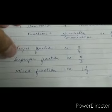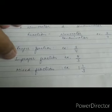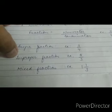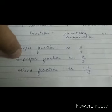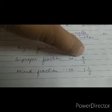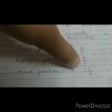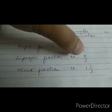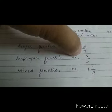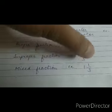The second type is improper fraction. An improper fraction is a fraction in which the numerator is greater than the denominator. For example, four upon three — four is greater than three.